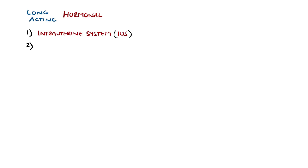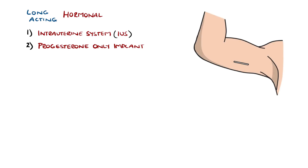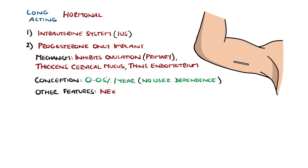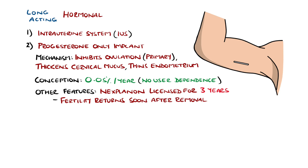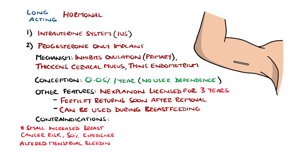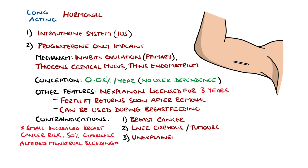Another long-acting hormonal option is the progesterone-only implant, typically placed in the upper arm. Its main mechanism is to inhibit ovulation, but it also leads to thicker cervical mucus and endometrial thinning. It has a 0.05% conception rate with perfect use, as there is no user dependence. Nexplanon, the most common implant in the UK, is licensed for 3 years. Fertility typically returns soon after removal and it can be used during breastfeeding. There is a small increased risk of breast cancer, and around 50% of females experience changes in menstrual bleeding. Contraindications include pregnancy, breast cancer, liver cirrhosis or tumours, and unexplained vaginal bleeding.